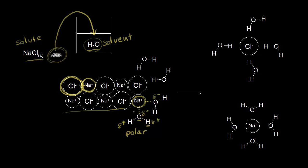The water molecules are going to pull off the sodium cations. The partial negative oxygens interact with the sodium cation — water is a dipole and the sodium cation is an ion, so we call this an ion-dipole interaction. The water molecules break the ionic bonds, pull off the sodium cation, and surround it.